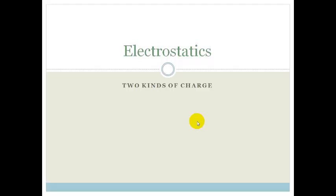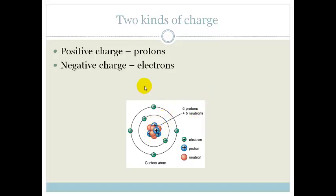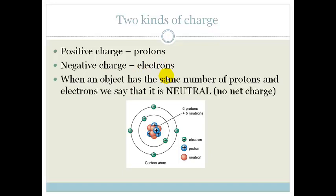What we need to know is to remember that there are two kinds of charge. Now if we look at this atom, we can remind ourselves that we have protons, which are positively charged, and negatively charged electrons. When an object has the same number of protons and electrons, we say it is neutral. In other words, there's no net charge.